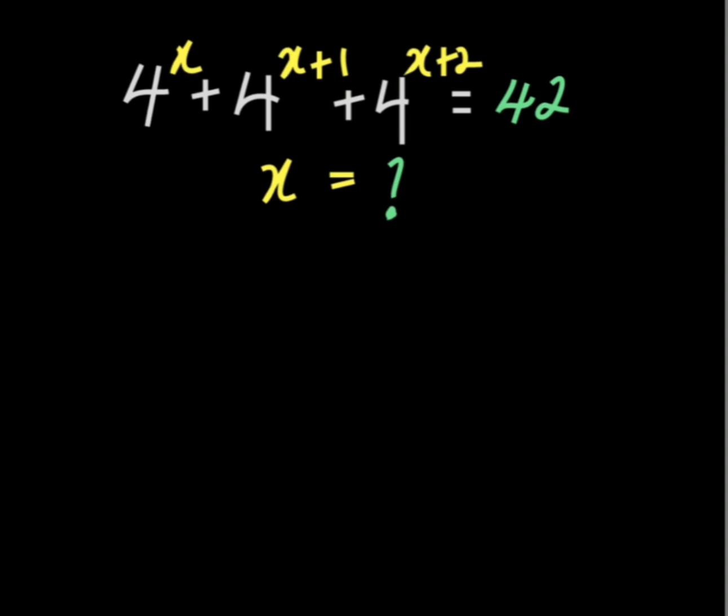Notice that 4 to the power of x can be repeated. Then, 4 to the power of x plus 1 is the same thing as 4 to the power of x multiplied by 4 to the power of 1 from the laws of indices because since the bases are 4 and 4, you can decide to add the power as x plus 1. Then, plus 4 to the power of x multiplied by 4 to the power of 2, everything is equal to 42.